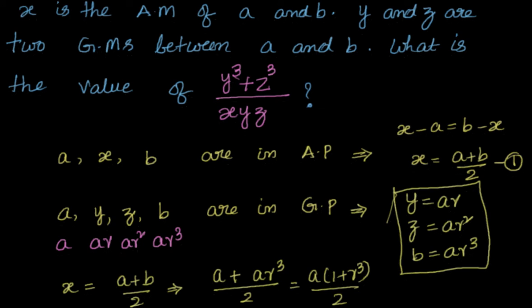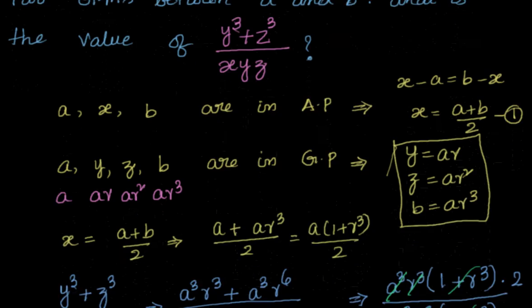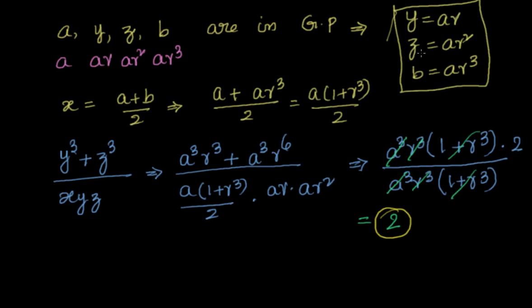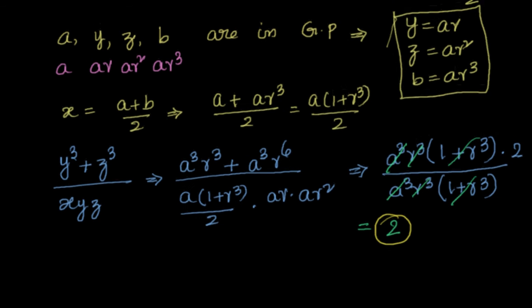To summarize: we were given that x is the AM of a and b, meaning a, x, b are in AP, so x equals (a + b)/2. We also know y and z are two GMs between a and b, meaning a, y, z, b are in GP, giving y equals ar, z equals ar², b equals ar³. With all values in terms of a and r, the expression y³ plus z³ divided by xyz simplifies to 2.